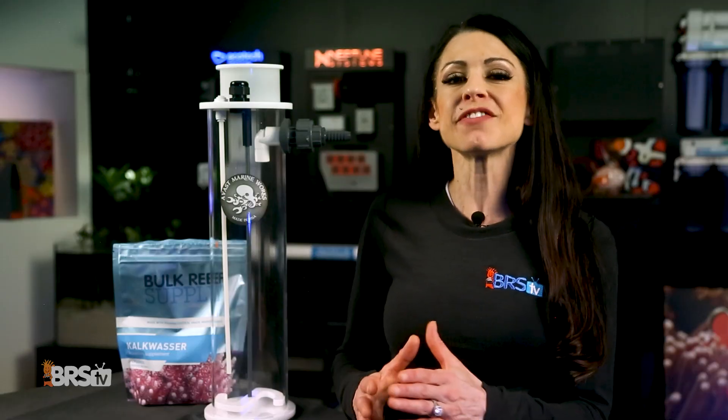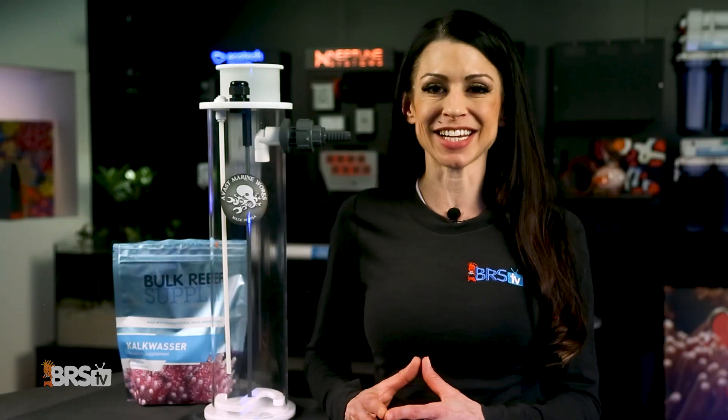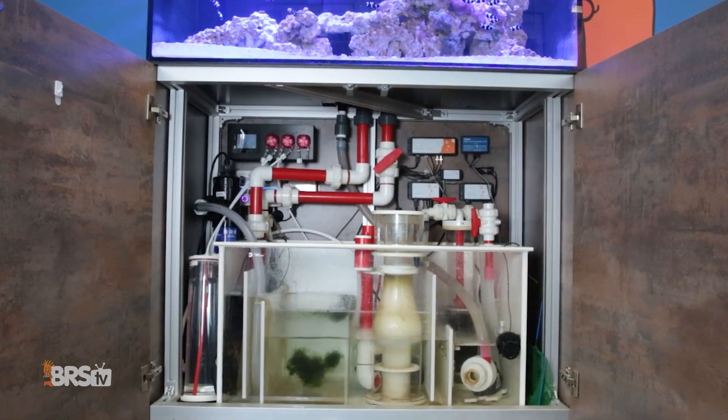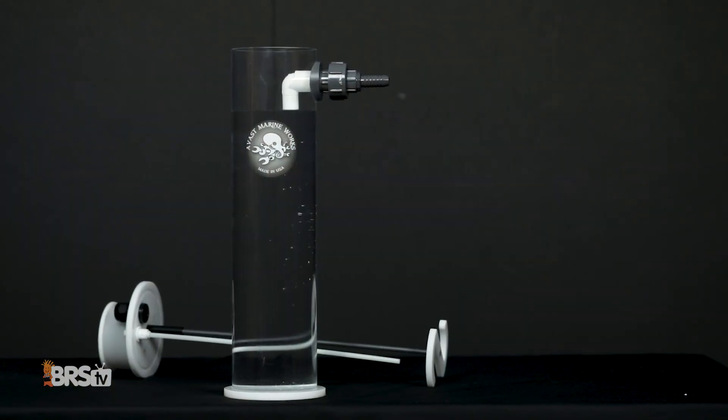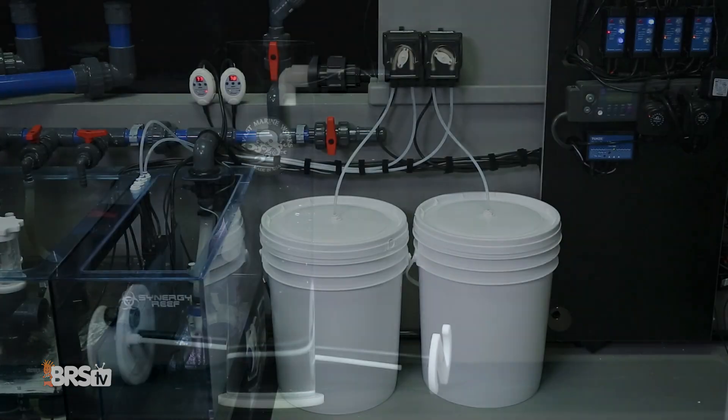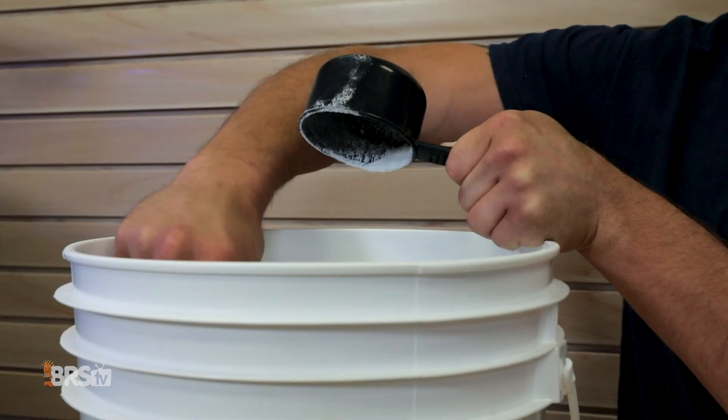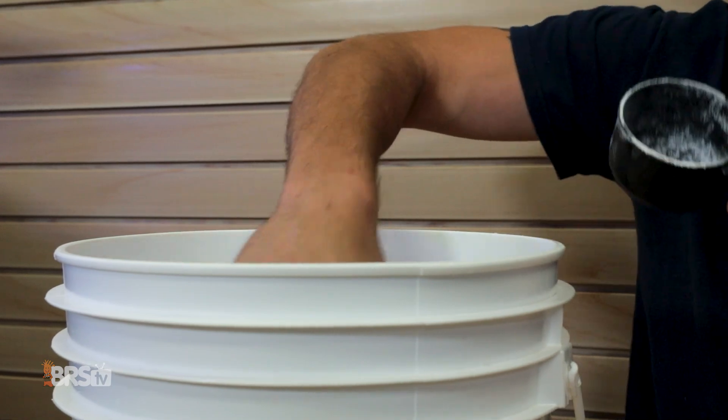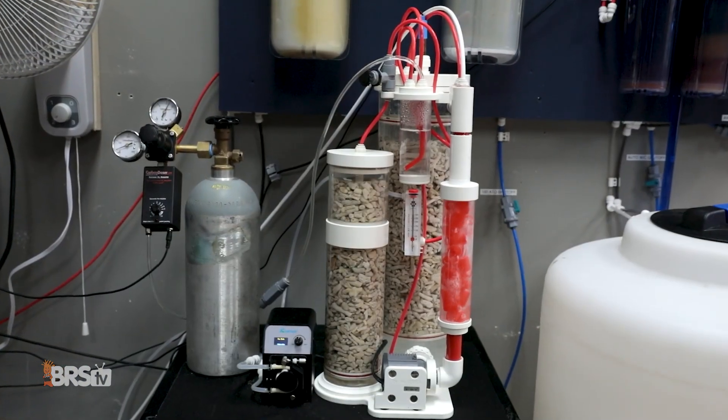And number two, the Avast Marine calc stirrer is a space saver. While most of us have limitations for all of our gear, the K1's small footprint makes it easier to fit than most two-part containers, large reservoirs of calc solution, and is definitely smaller than an entire calcium reactor setup.